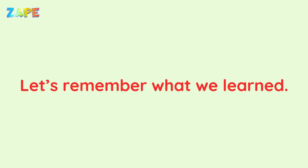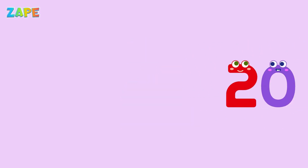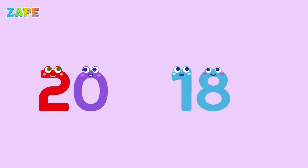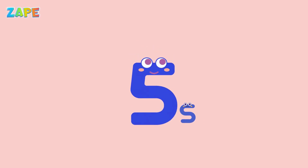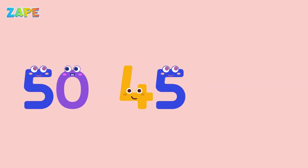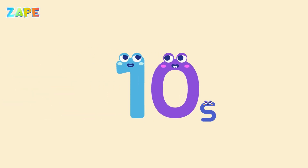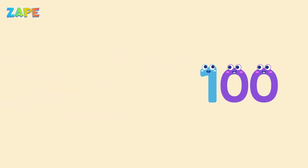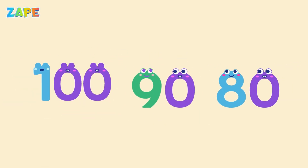Let's remember what we learned. Count backward by twos: 20, 18, 16. Count backward by fives: 50, 45, 40. Count backward by tens: 100, 90, 80.